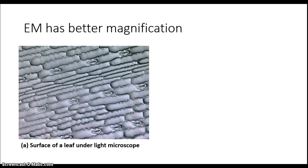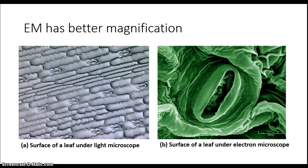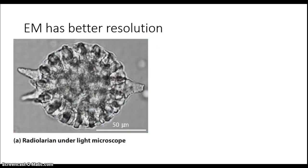Electron microscopes offer far greater magnification. This is the surface of a leaf under a light microscope, and these structures called stomata are magnified to a far greater degree with the electron microscope image on the right side. They also offer far greater resolution — the electron microscope image gives you levels of detail that cannot be seen in this light microscope image of a radiolarian.